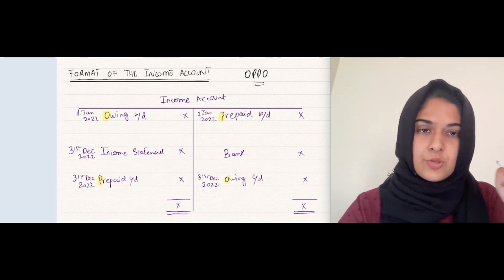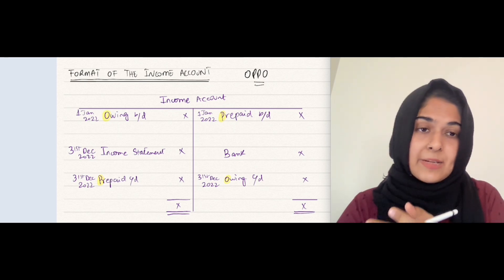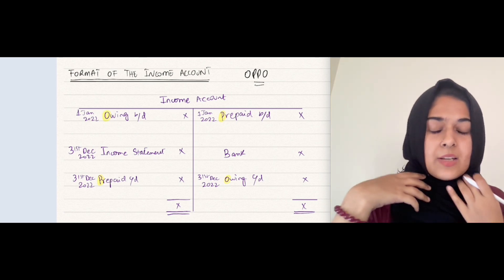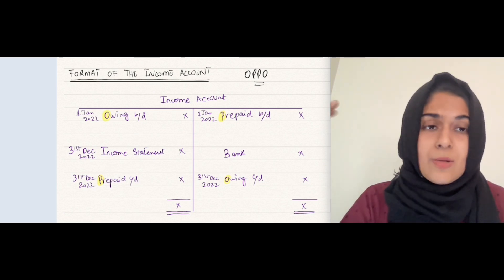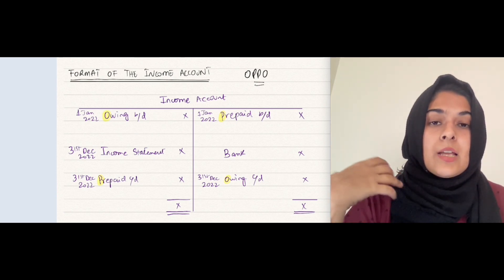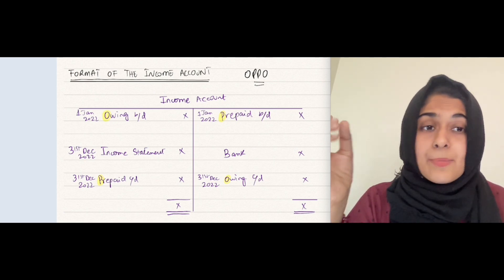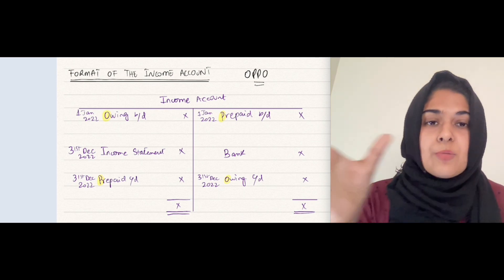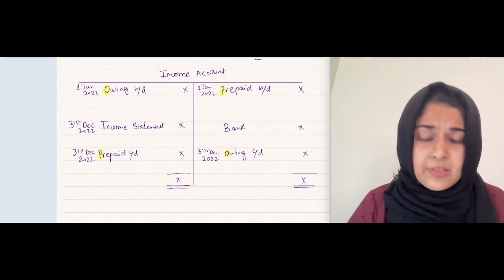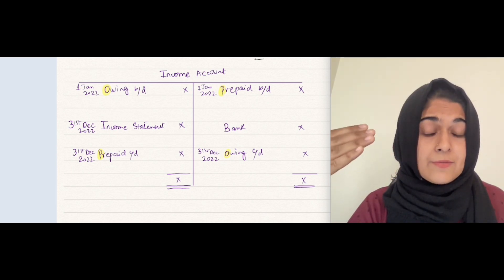For the income account, the same OPPO rule applies - it goes towards the right and then comes back down. Where brought down appears, carried down appears on the opposite side. Where prepaid brought down is, prepaid carried down is on the opposite side. Owing brought down is on the debit side because owing income is a current asset - you gave the service but did not receive the money, so you will receive it in the future. Prepaid brought down is on the credit side because you have received the money but have not yet given the service - that is your current liability.